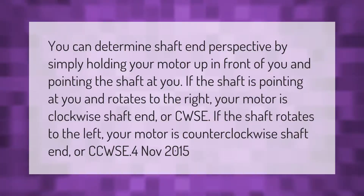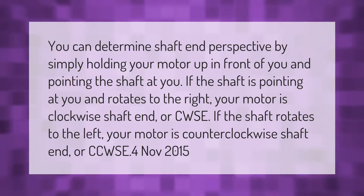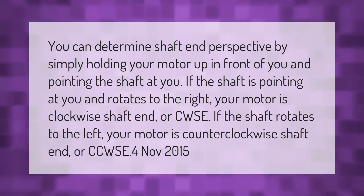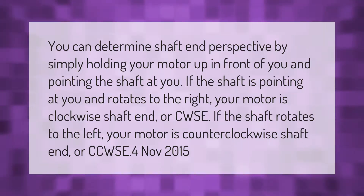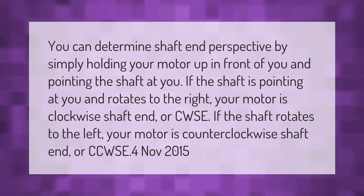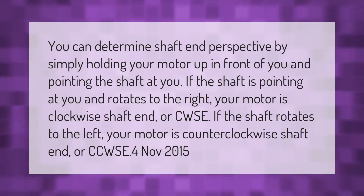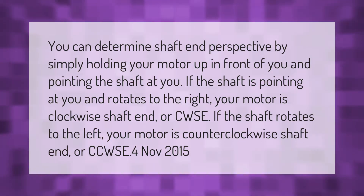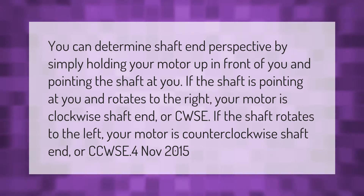You can determine shaft end perspective by simply holding your motor up in front of you and pointing the shaft at you. If the shaft is pointing at you and rotates to the right, your motor is clockwise shaft end, or CWSE. If the shaft rotates to the left, your motor is counterclockwise shaft end, or CCWSE.